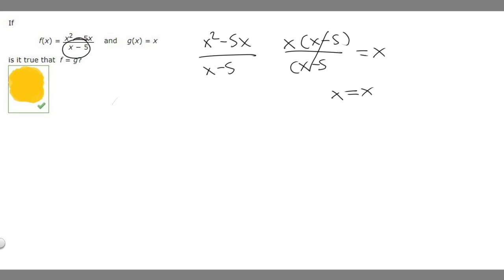If we plug in a 5, let's start with g(x). If we plug in a 5 into that, we'll get g(5) is equal to just 5. But in f(x), if we plug in a 5, f(5) is going to equal, if we plug in 5, it would become 5 squared, which is 25, minus 5 times 5, which is 25, over 5 minus 5, which equals 0 over 0. And this is going to be indeterminate.